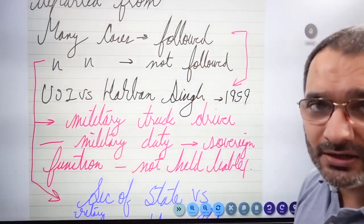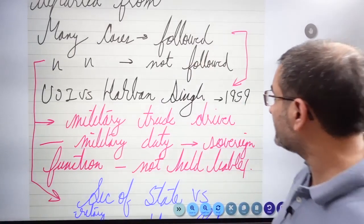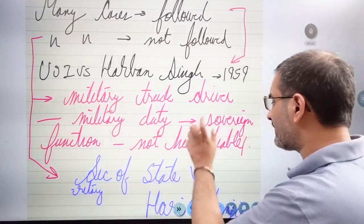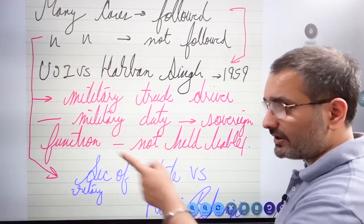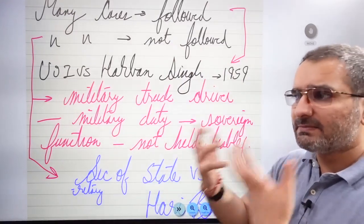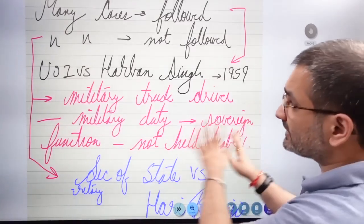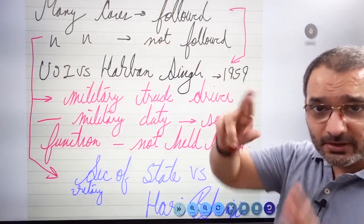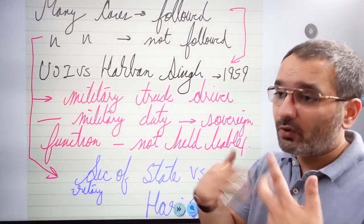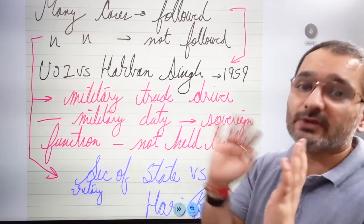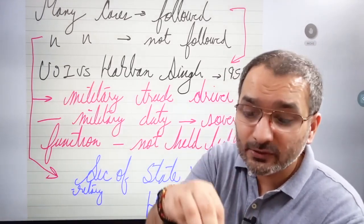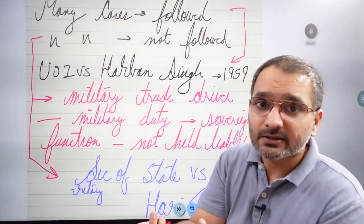Union of India vs Harban Singh in 1959, in which a military truck driver was on military duty and caused an accident. It was held that he was on a sovereign function and was not held liable. For example, presume you're going up to Manali and there's a military truck transporting missiles, arms, ammunition. Will the state be held liable? The court said sorry, they are following the P&O case because the military work is an exercise of sovereign power. This is a very gray area of law. What is sovereign and non-sovereign depends on judge, court, and case.